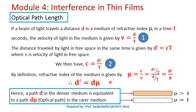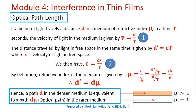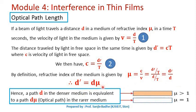From the definition of refractive index, it is defined as the ratio of velocity of light in free space to the velocity of light in the medium — that is called the refractive index of the medium. So refractive index mu is written as c upon v, where c is d dash upon t and v is d upon t. The t cancels, and refractive index can be written as d dash upon d. Therefore, we can write d dash equal to d into mu.